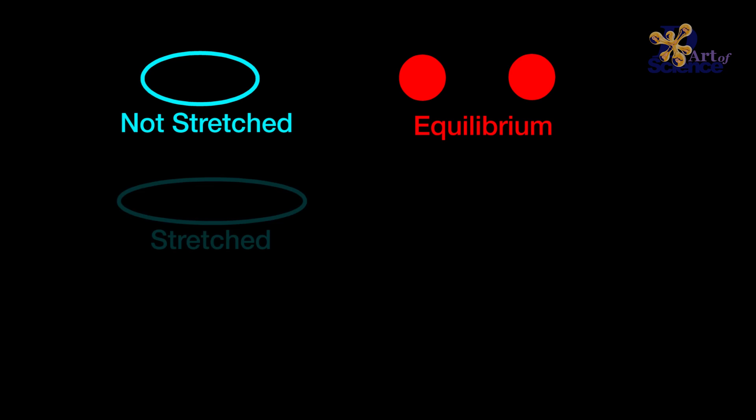Let's assume that these are two of the many atoms inside a rubber band. In a normal case, when the rubber band is not stretched, the two atoms exist in equilibrium. It means that they do not exert any forces on each other.